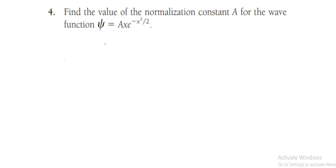Hi, this is the fourth question from the quantum mechanics chapter. Find the value of the normalization constant A for the wave function psi equal to A x e to the power minus x square by 2.